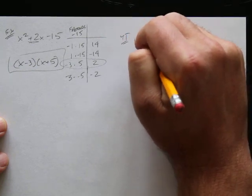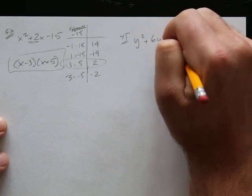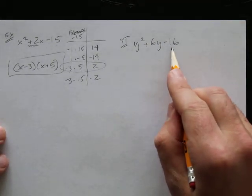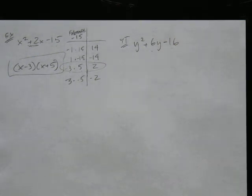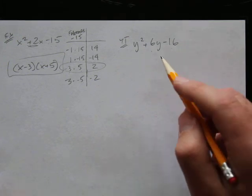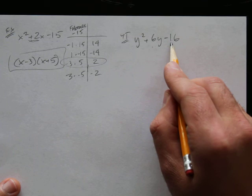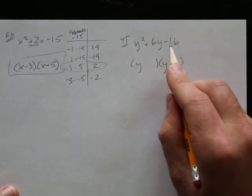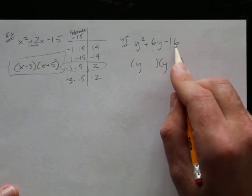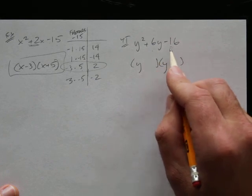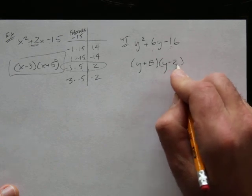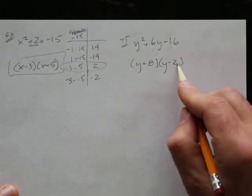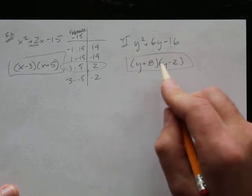Try y squared plus 6y minus 16. What multiplies to negative 16 and adds to positive 6? Since 2 and 8 multiply to 16 and 8 minus 2 is 6, I want positive 8 and negative 2. So 8 times negative 2 is negative 16, and positive 8 plus negative 2 is positive 6. The answer is y plus 8 times y minus 2.